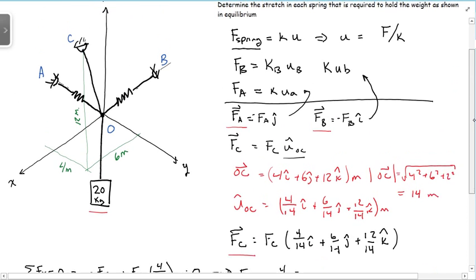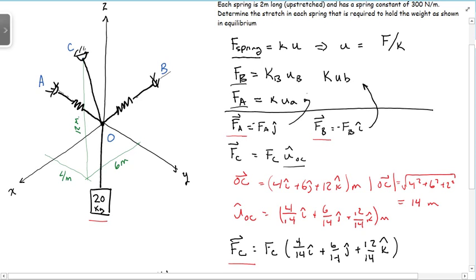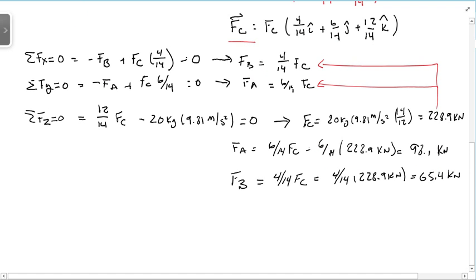So now we just go back to our original equation up here. We know FA and FB and we can solve for the displacements UA and UB knowing that K is 300 newtons per meter. Let's go ahead and do that. So we have FA is equal to K times UA.